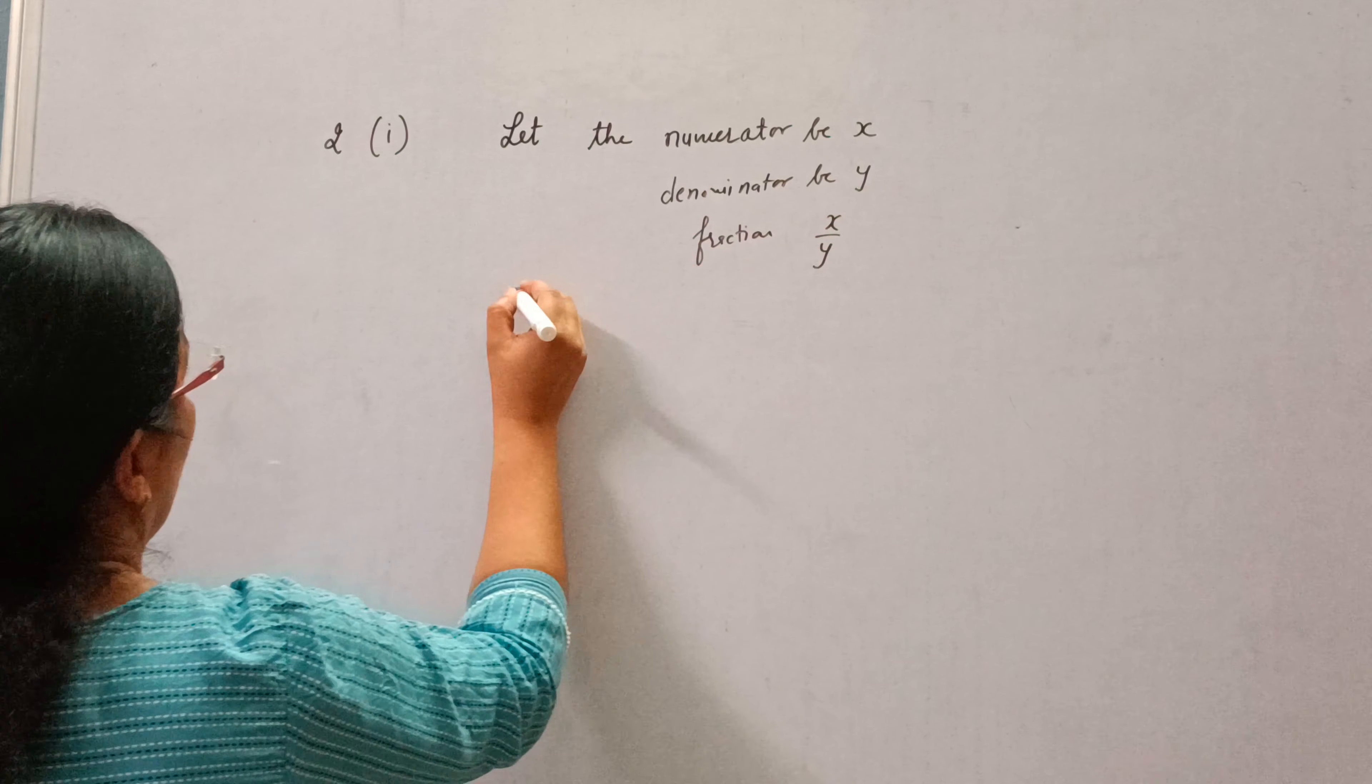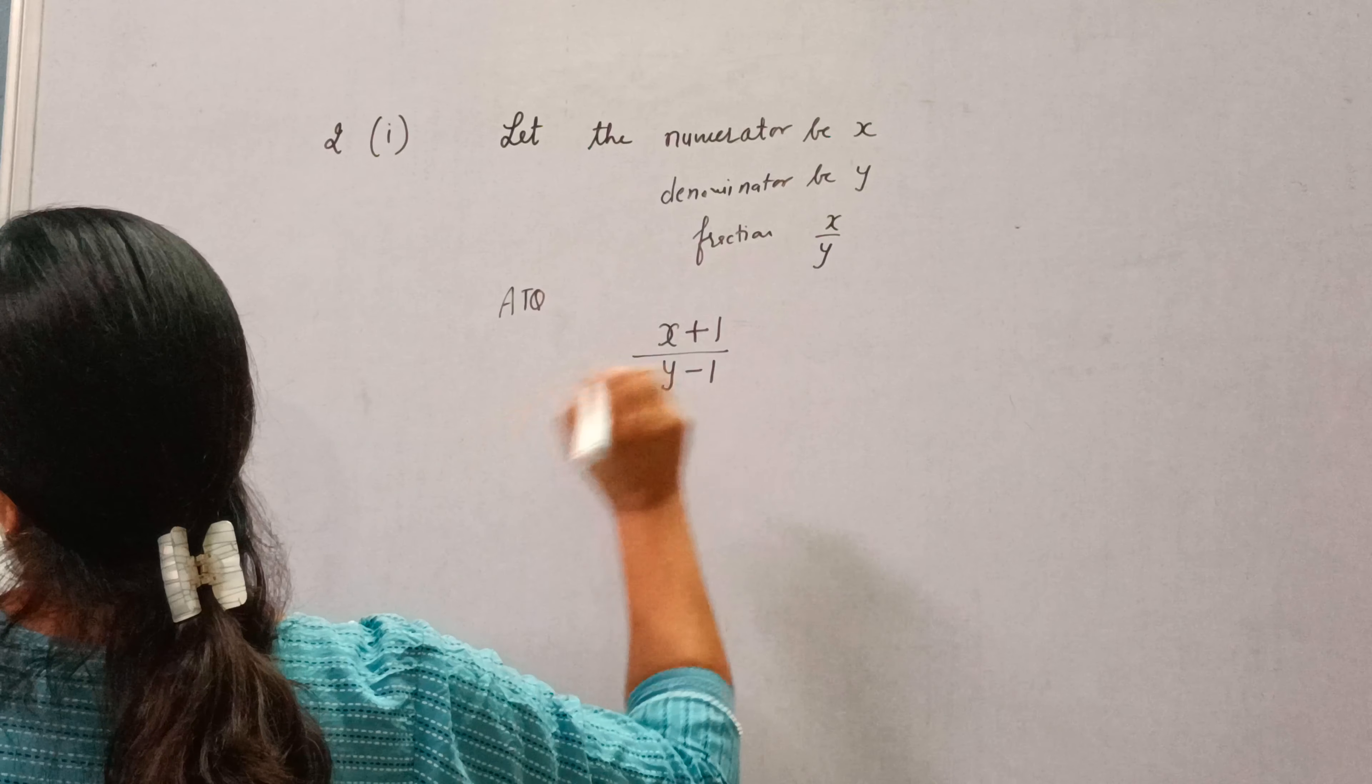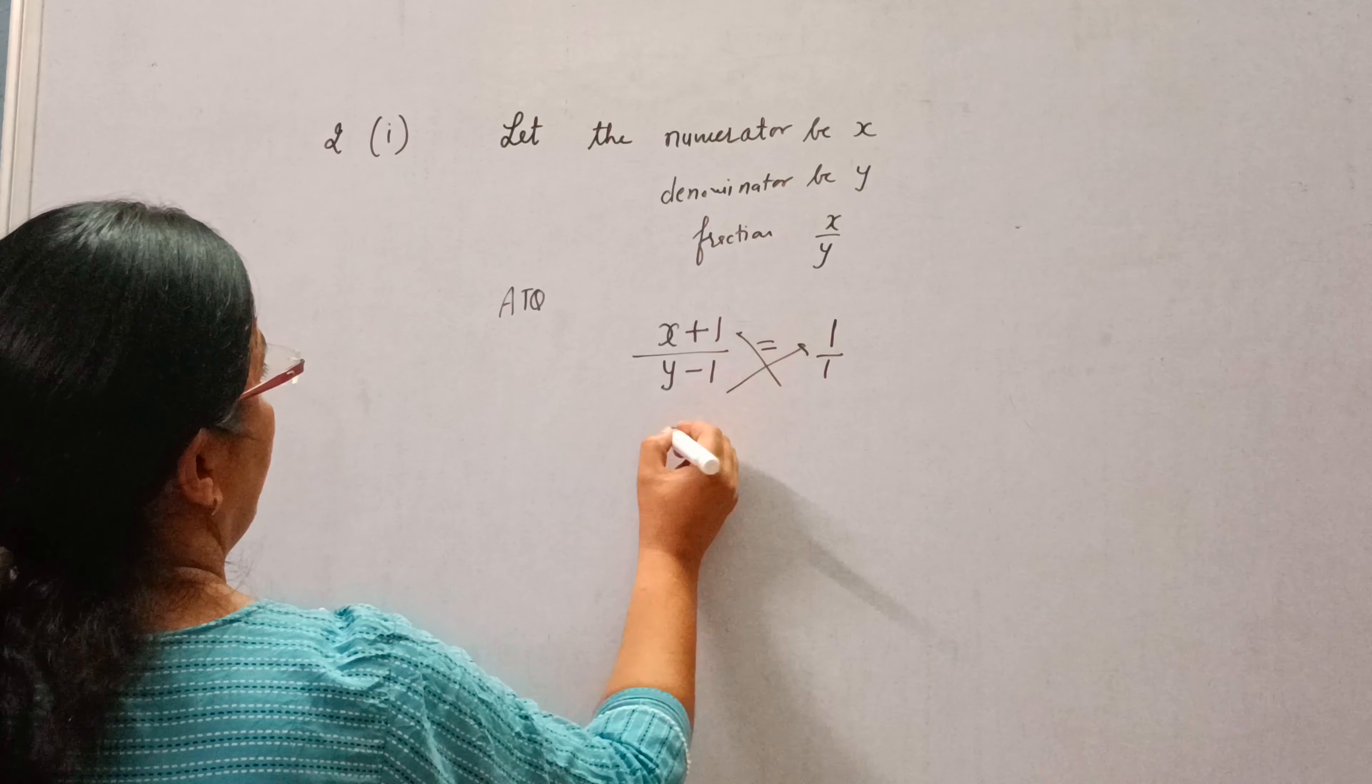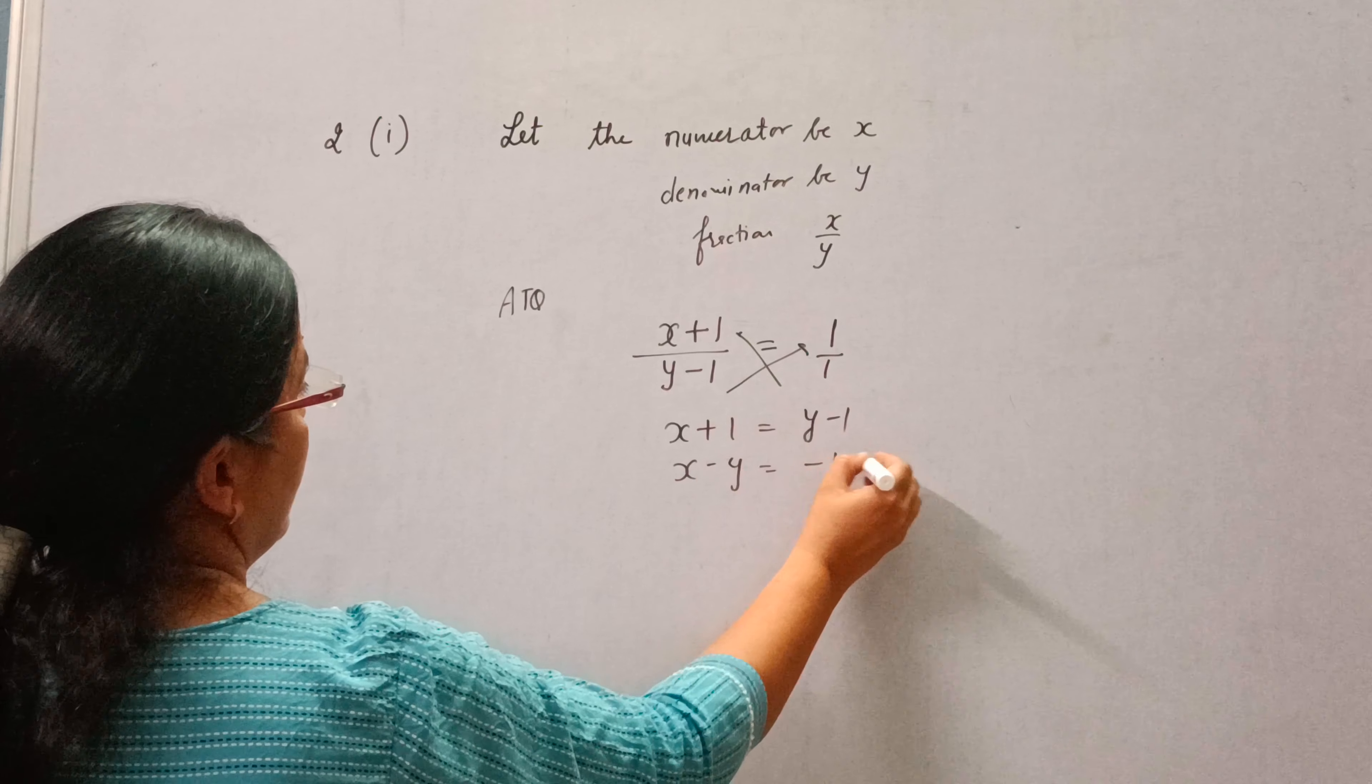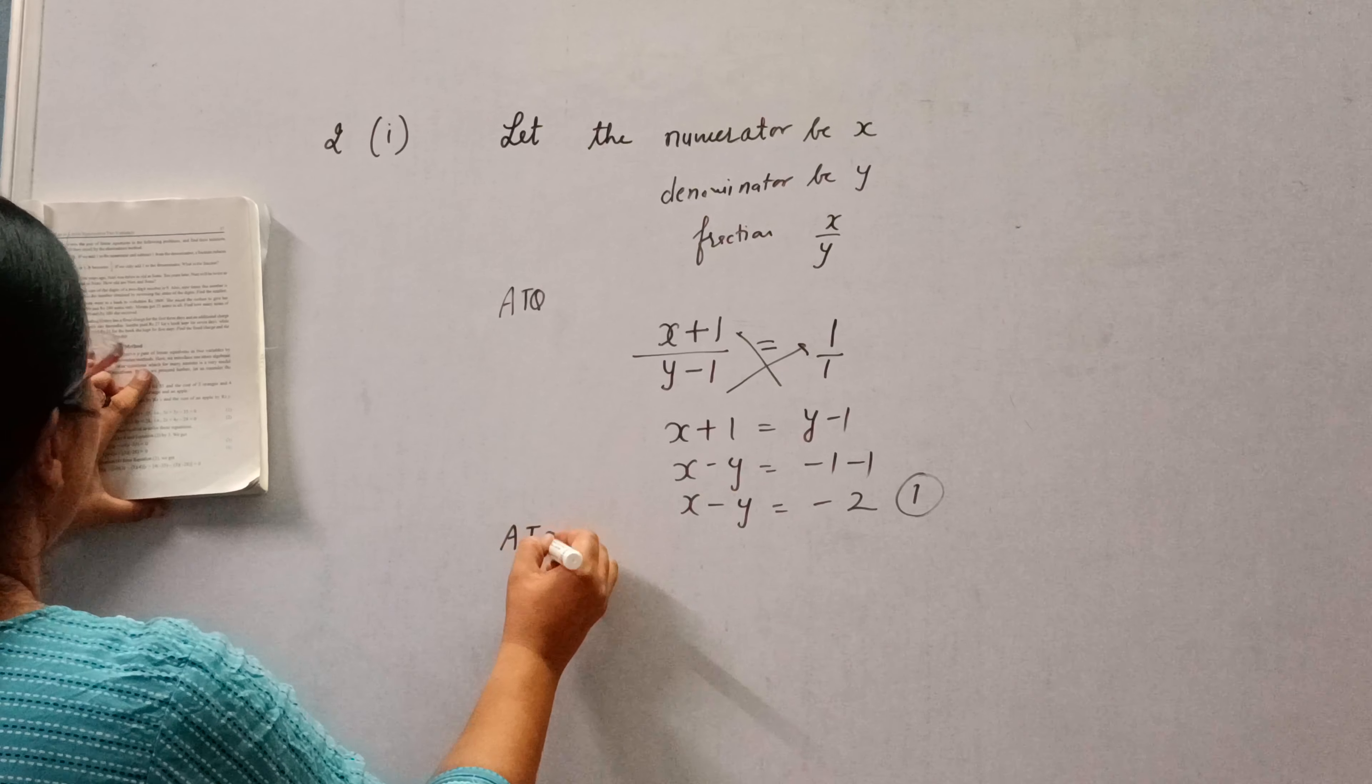Now according to the question, if we add 1 to the numerator and subtract 1 from the denominator, the fraction reduces to 1. Cross multiply: x plus 1 is equal to y minus 1. So x minus y is equal to minus 2. This is the first equation.